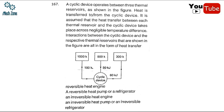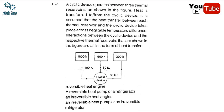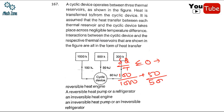We need to find out whether it is a reversible heat pump, a refrigerator, an irreversible heat engine, or an irreversible heat pump. First, we apply the Clausius inequality: ∮δQ/T ≤ 0. Applying this: 100/1000 + 50/500 - 60/300 = 0. Since δQ/T = 0, the correct answer is that it is a reversible heat engine.